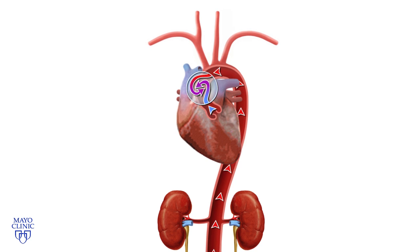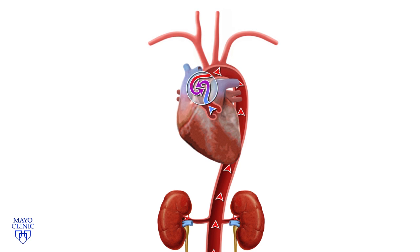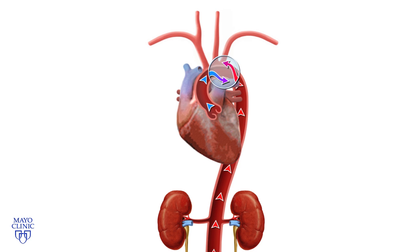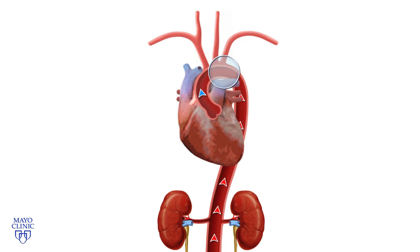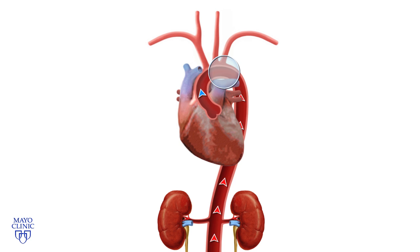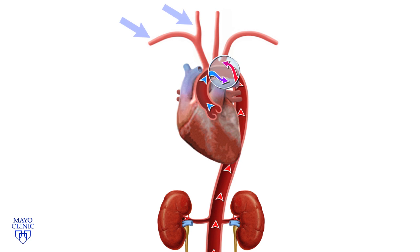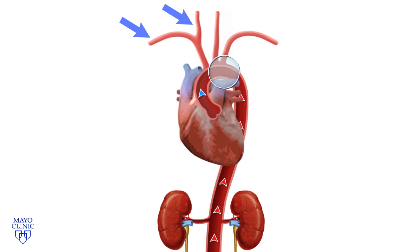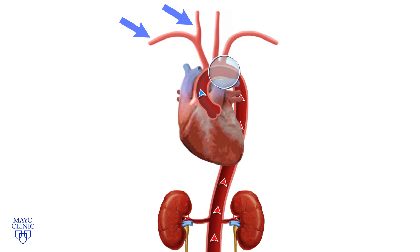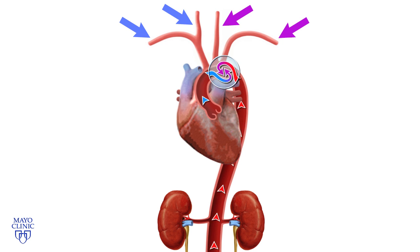As the heart contracts more and more forcefully, or as ECMO flows decrease, the location of the mixing cloud can migrate more distally in the aorta. In the scenario illustrated here, consider the impact of the circulatory pattern on cerebral perfusion. The brachiocephalic artery is perfused by blood from the left ventricle, which may be poorly oxygenated. However, the distal arch vessels are perfused by a mixture of blood being pumped from the left ventricle and blood pumped from the ECMO circuit.